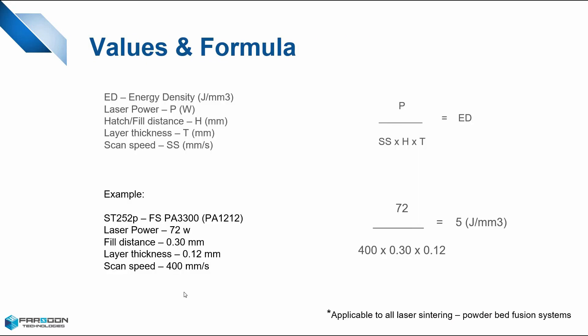So what exactly is the formula and what values do we use to get the solution? We have energy density, measured in joules per millimeter cubed. We have laser power, measured in watts. We have hatch or fill distance, measured in millimeters. We have layer thickness, also measured in millimeters. And lastly, we have scan speed, measured in millimeters per second. For the formula, we divide laser power by scan speed times fill distance times layer thickness to arrive at your energy density.